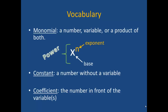We are going to begin by talking about vocabulary. A monomial is a number, variable, or a product of both. In this example, x is the base and n is the exponent. When we have a base raised to an exponent, we collectively call that a power.